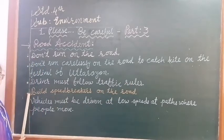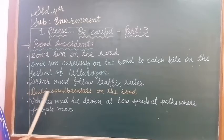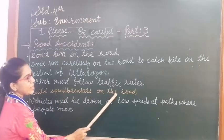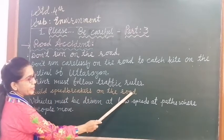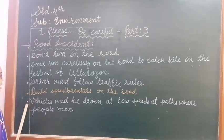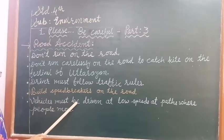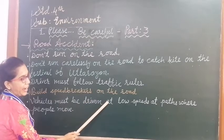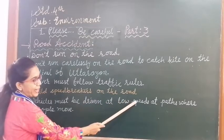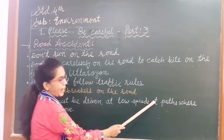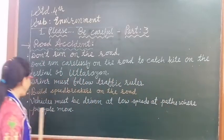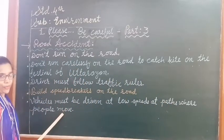Fourth point: Install speed breakers on the road. Last point: Vehicles must be driven at low speeds at places where people move.